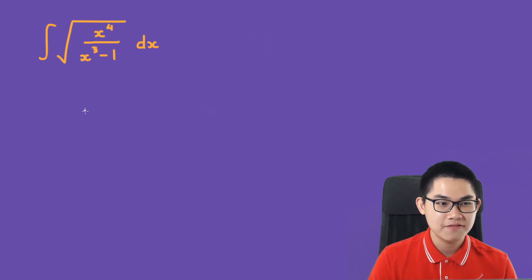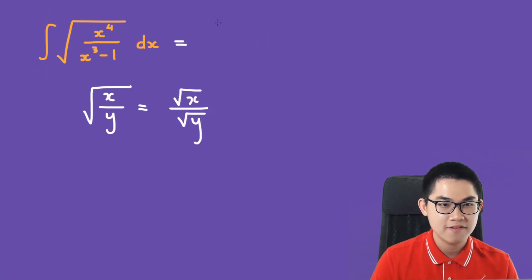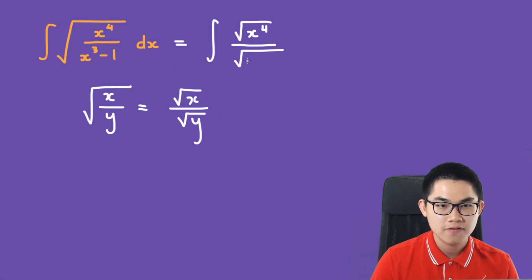The first step is to simplify this expression. If you remember, we have the square root of x over y, and this equals the square root of x over the square root of y. So here we have the integral of the square root of x to the power of 4 divided by the square root of x to the power of 3 minus 1, dx.